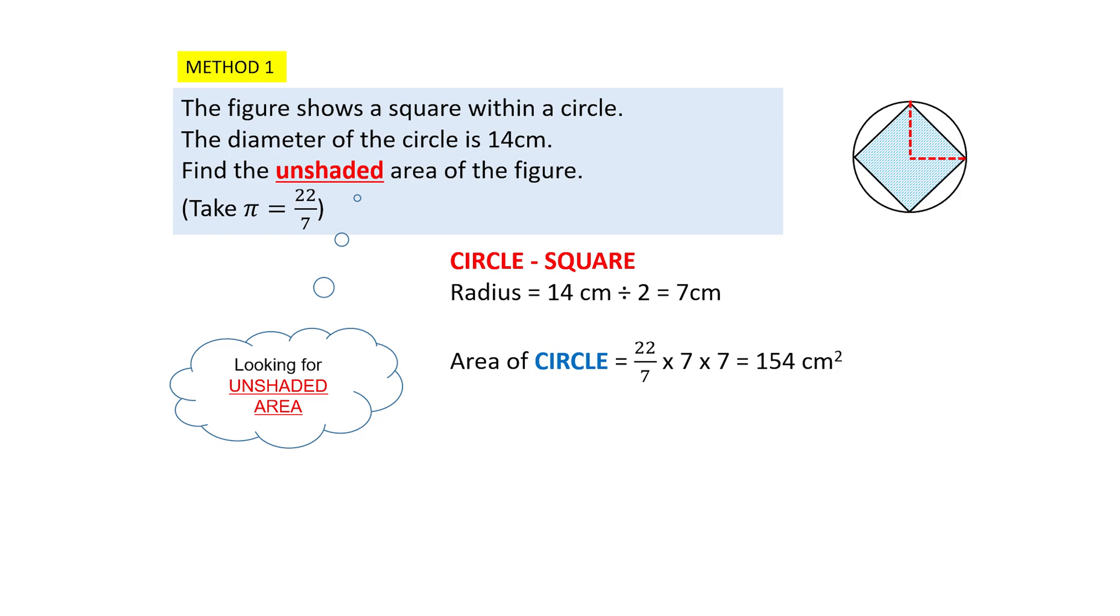Now we need to find the area of the square. The area of the square is made up of four triangles. And I just need you to focus on only one triangle because we are very familiar with this formula of half times 7 times 7. And since there are four triangles in a square, we will multiply it by 4. And the answer is 98 cm².